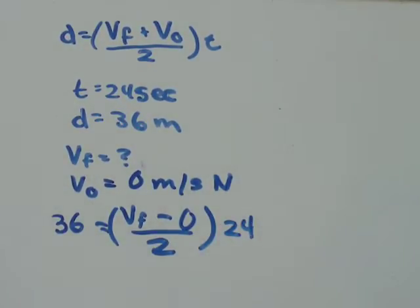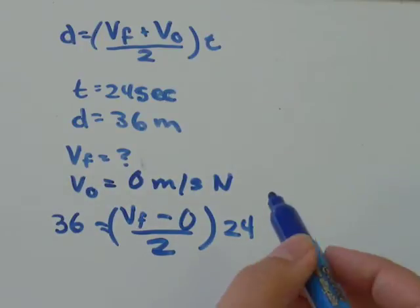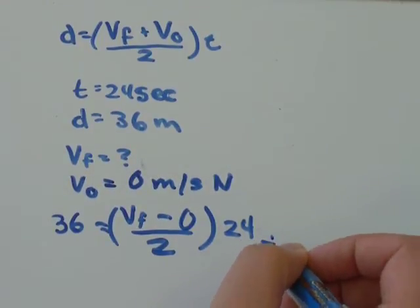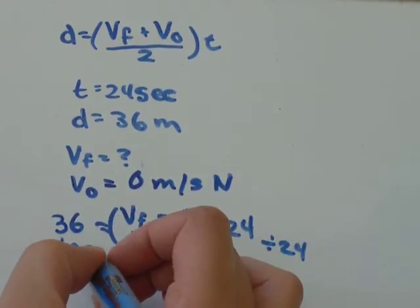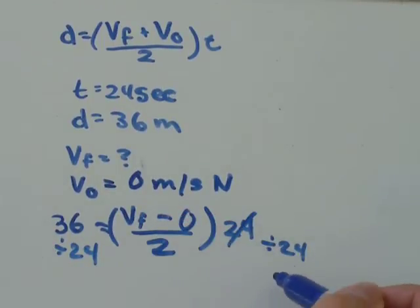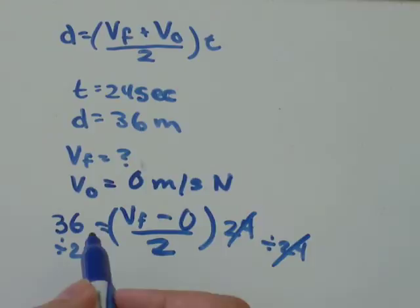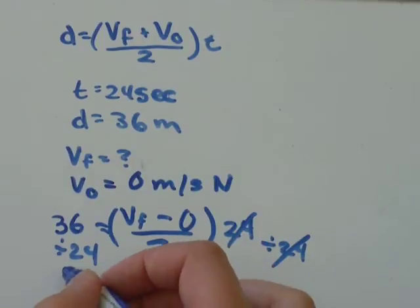So, the first thing I'm going to do is divide by 24 on both sides so that 24 will go away. On this side, 36 divided by 24 is going to be 1.5.